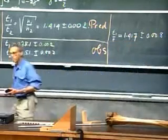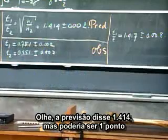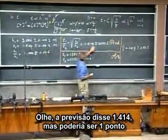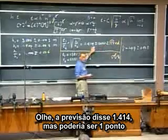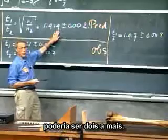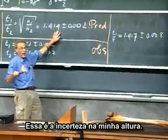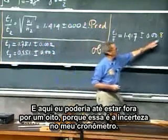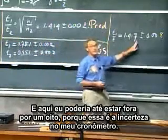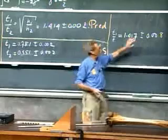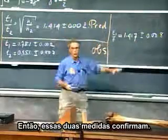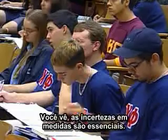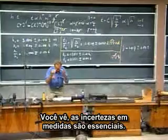Perfect agreement. The prediction says one-point-four-one-four, but it could be two higher — that's the uncertainty in my height. And here I could even be off by an eighth, because that's the uncertainty in my timing. So these two measurements confirm — they are in agreement with each other. As you see, uncertainties in measurements are essential.